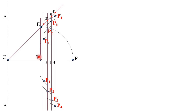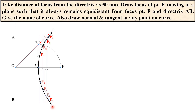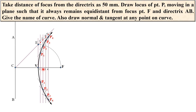Now join all the points with a smooth curve. Take care that it must pass through vertex point V, because V is the vertex point of the parabola. This is your first answer: the locus of point P. For the second answer, since VF equals VC, the eccentricity equals 1, so the curve is a parabola.